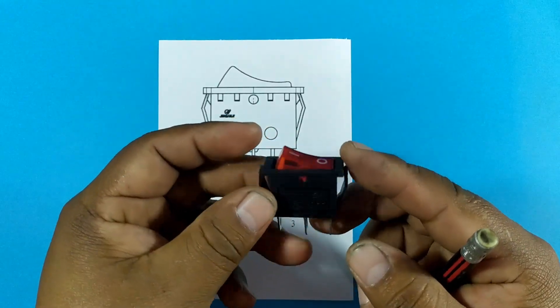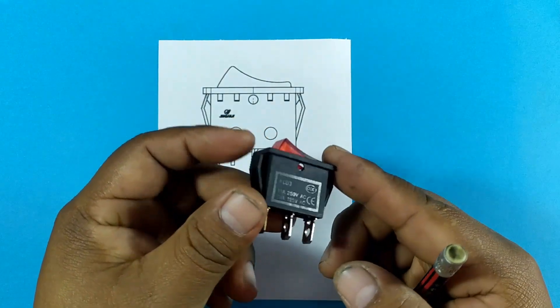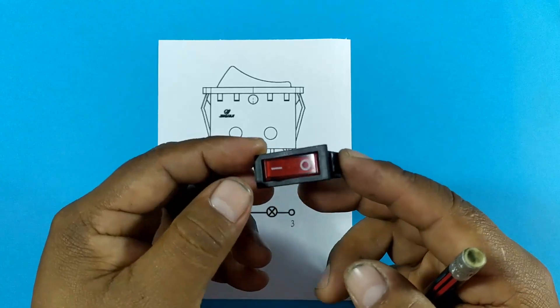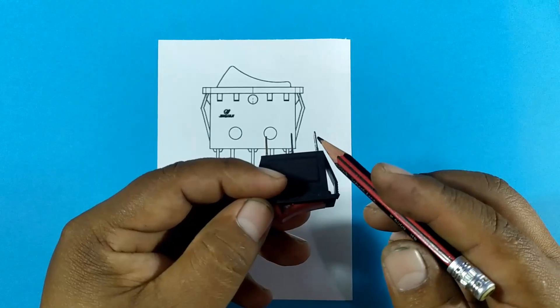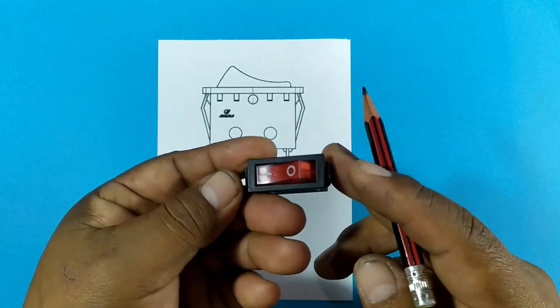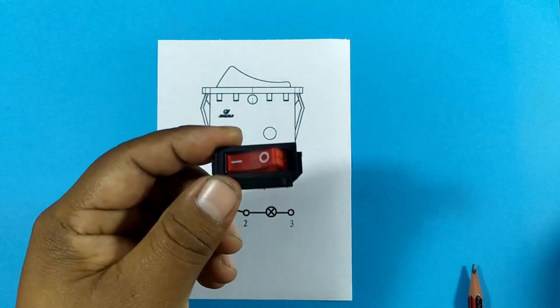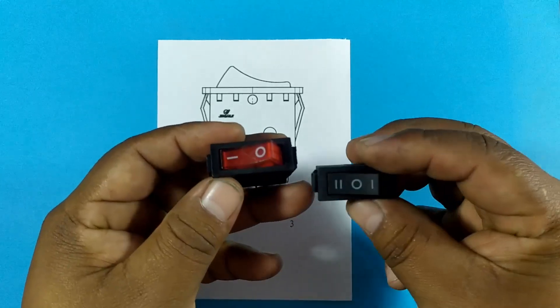This switch has a neon light inside, so these allow us to know when the switch is actually working and if the current that we connect to it is really passing. Unlike other switches, this does tell us that current is present in the pins of our switch.